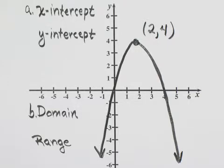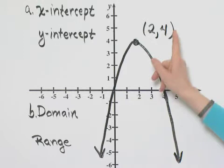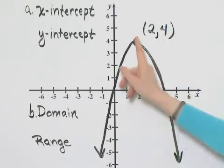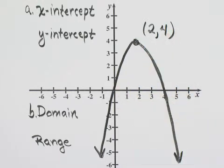Here I've sketched a parabola. For part A, let's identify the x and y intercepts. For part B, let's find the domain and range of this function. Notice this is a function because it does pass the vertical line test.